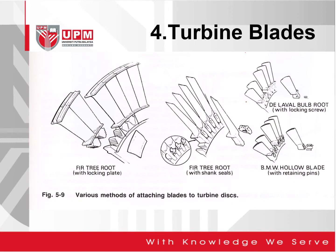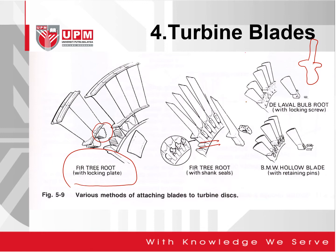We have the fir tree root with locking plate as shown here. You can see the fir tree shape as shown in this figure, and the fir tree root with shank seals is shown in the next figure. The previous old engines using De Laval bug root had a shape like a bulb. The BMW hollow blade with retaining pin as shown here is no longer being used nowadays.